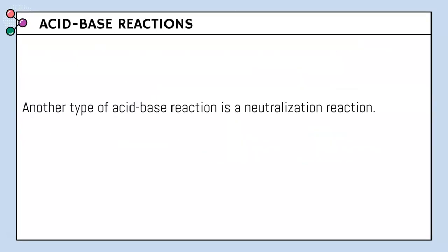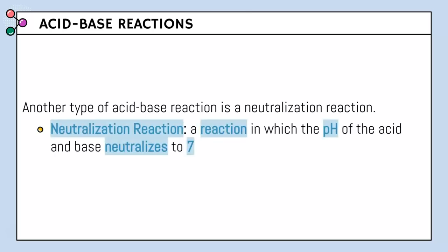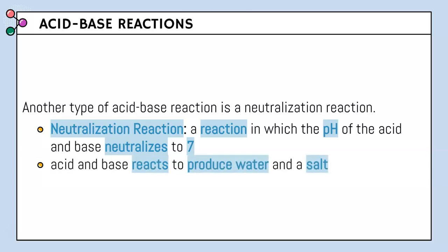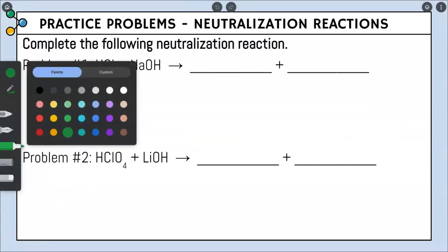Another type of acid-base reaction is a neutralization reaction. A neutralization reaction is a reaction in which the pH of the acid and base neutralizes to seven — the acid and base react to produce water and a salt. Pure water has a pH of seven, which is why we get the word neutralization.